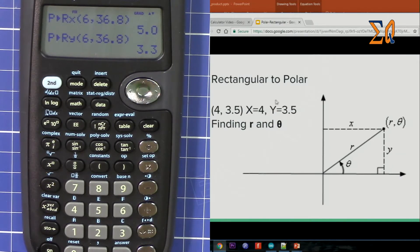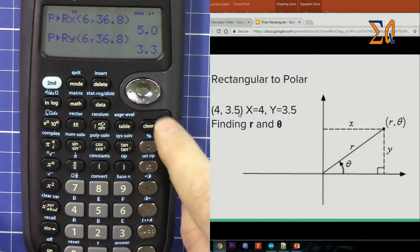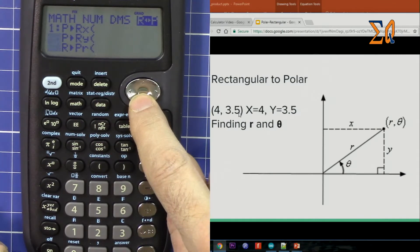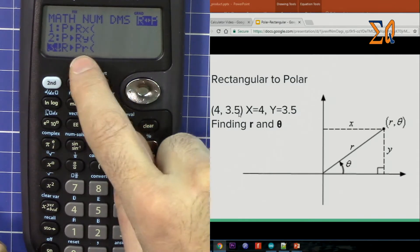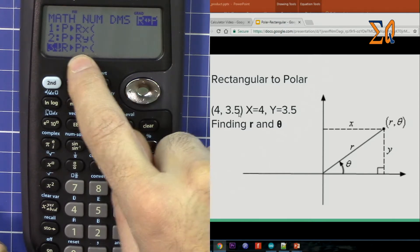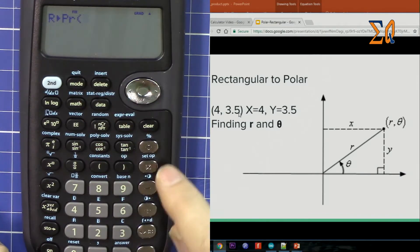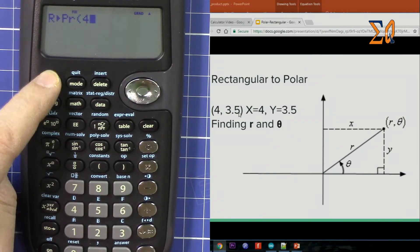We want to get the polar coordinates. We have X is 4 and Y is 3.5. So 4 comma 3.5. Clear, math, go to the next one. So here we want to get R, the polar coordinate. So first, 4, second function, comma, 3.5.